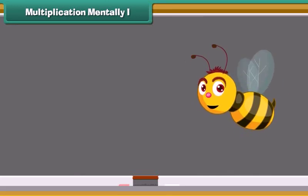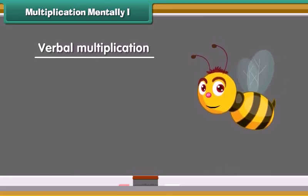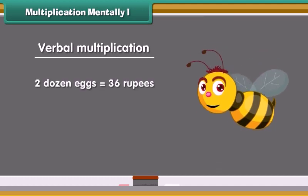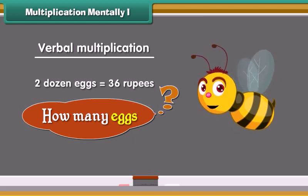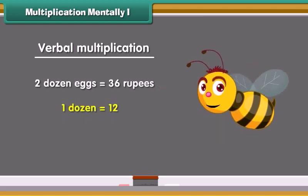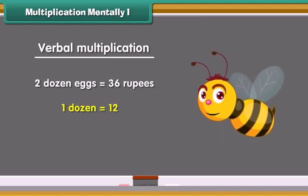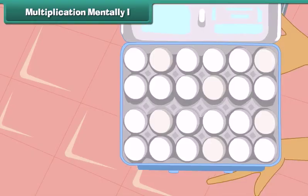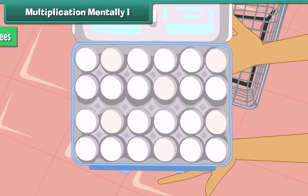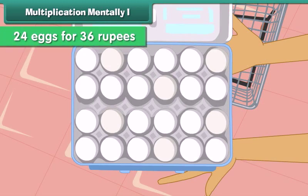Let us look at some examples of verbal multiplication. Jennifer buys 2 dozens of eggs for 36 rupees. How many eggs did she buy? We know 1 dozen equals 12. Therefore, 2 dozen will be equal to 24. Thus, Jennifer bought 24 eggs for 36 rupees.